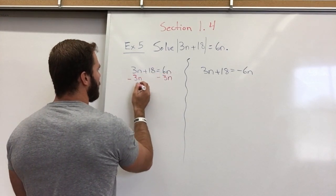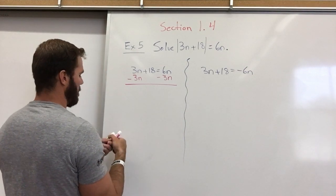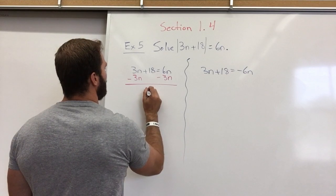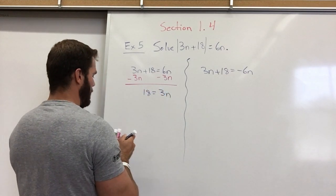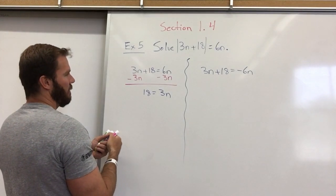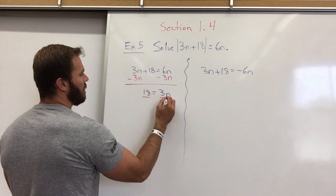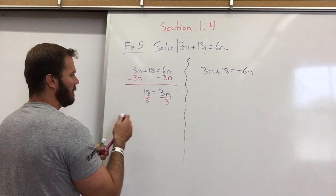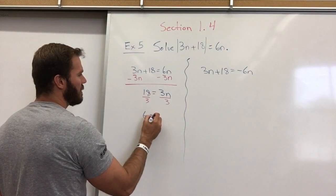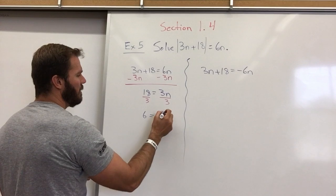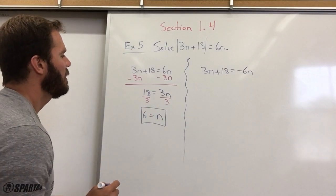Subtracting 3n on both sides, we get 18 equals 3n. Then I'm going to divide both sides by 3, so 18 divided by 3 is 6, the 3s cancel out, and we get n equals 6.